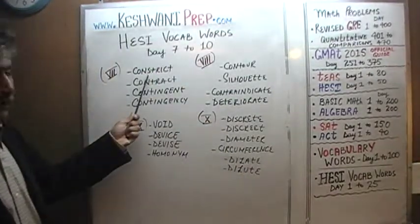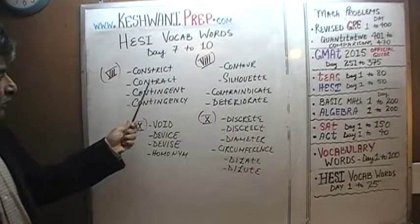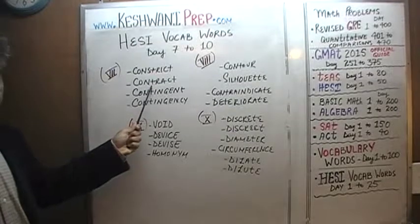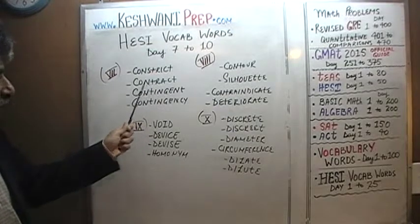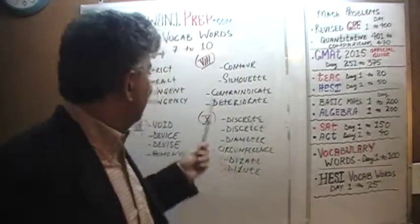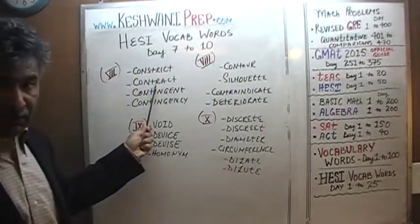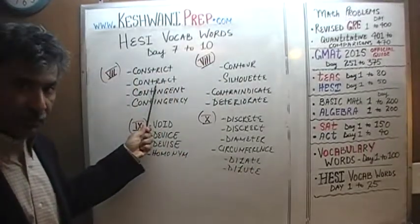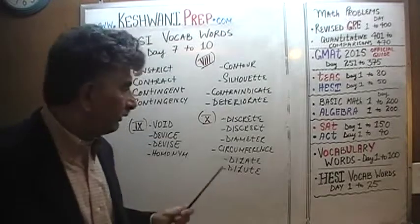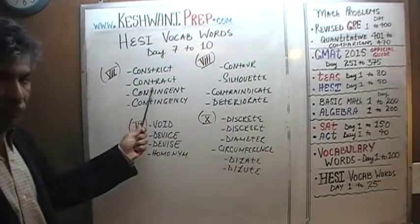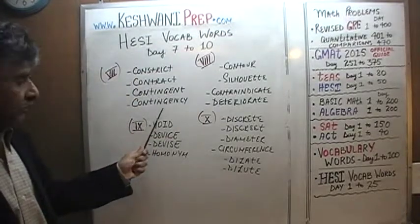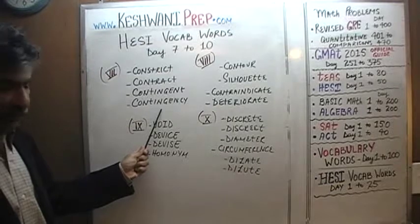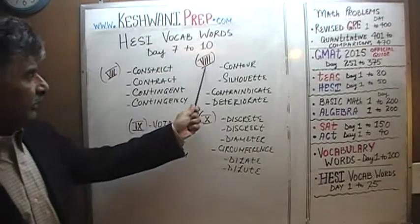On day number 7, we learned about constrict. We also covered the word contract — this word is pronounced two different ways, and depending on how you pronounce it, it will have two different meanings: contract and contract. We also covered contingent and contingency. That was day number 7.